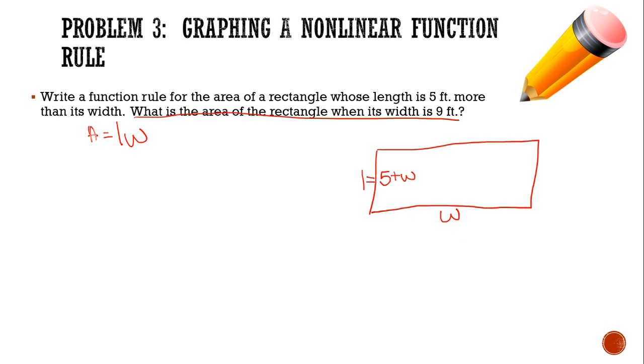So now I need to find my area. So I'm going to go W times 5 plus W. Like that. So my area, if I distribute my W in, W times 5 is 5W. And a W times a W is a W squared. Not 2W, but W squared. Now, I've gotten my function rule. Here's my function rule right here.